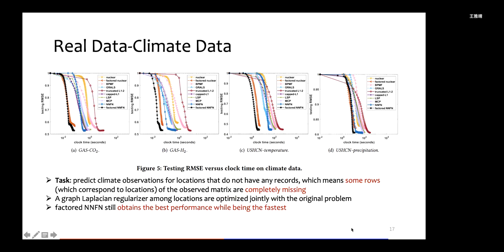Another real dataset we use is the climate data, actually four datasets. The task is a little bit different from the others. Because we now have some rows that are completely missing because we do not have any climate observations for those locations. Therefore, we have to add graph Laplacian regularizers, which capture the similarity between locations, and we optimize these new regularizers with the original matrix completion problems. Although the problem setting is a little bit different, the observation is still consistent. Our factored NNFN regularizer obtains the best performance while being the fastest.